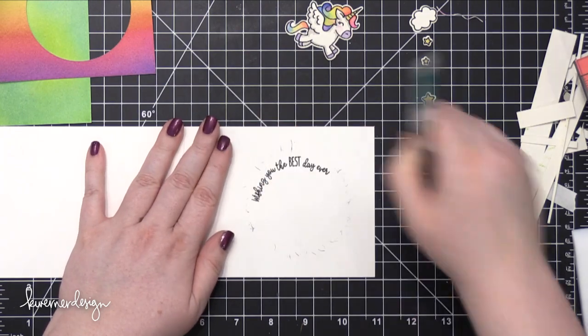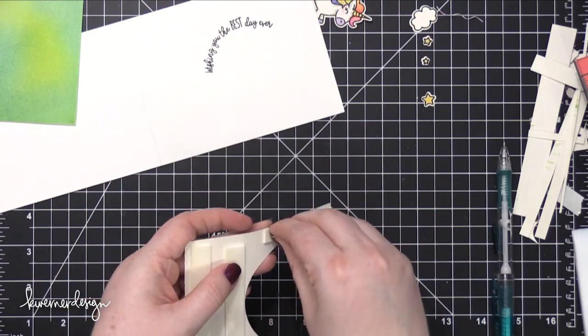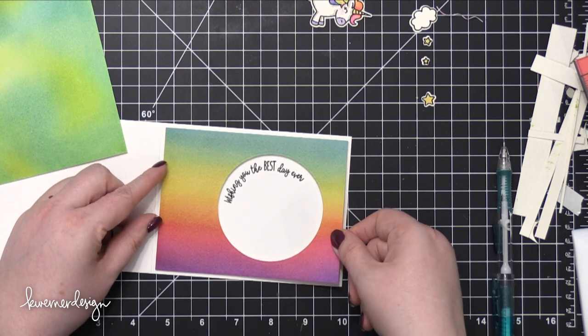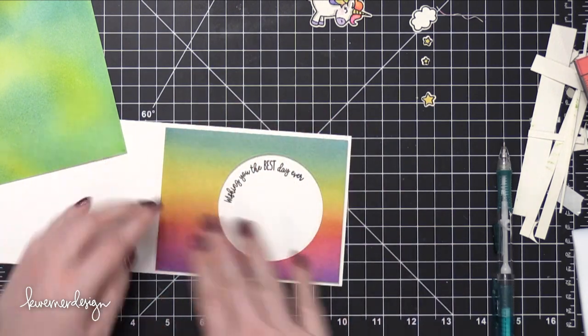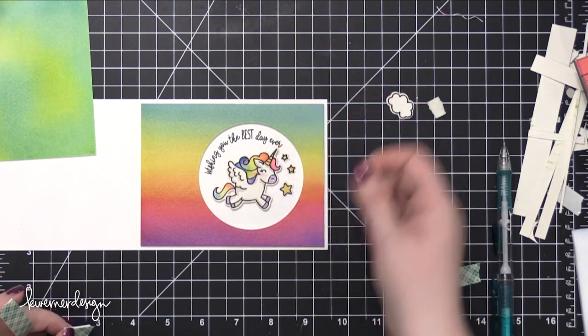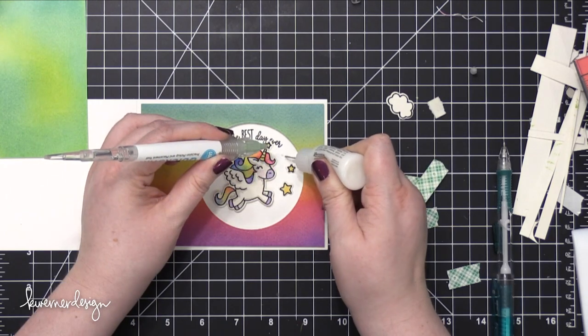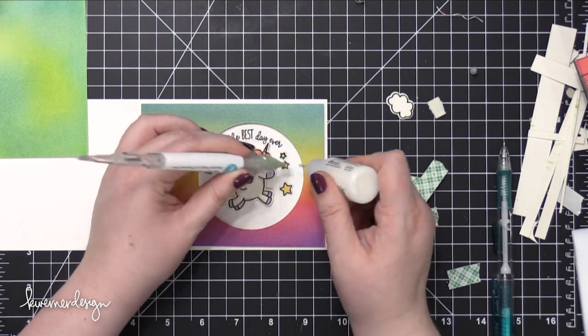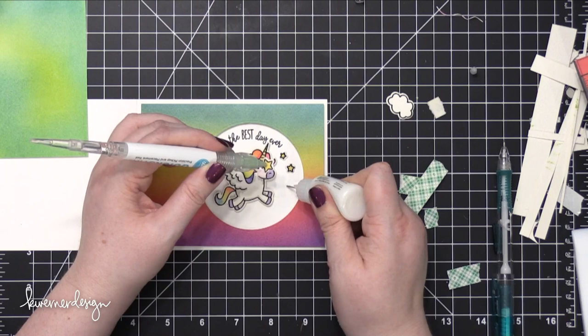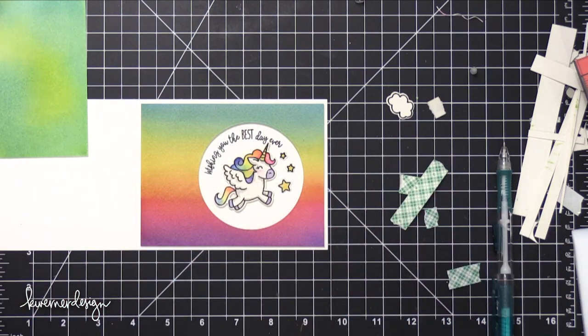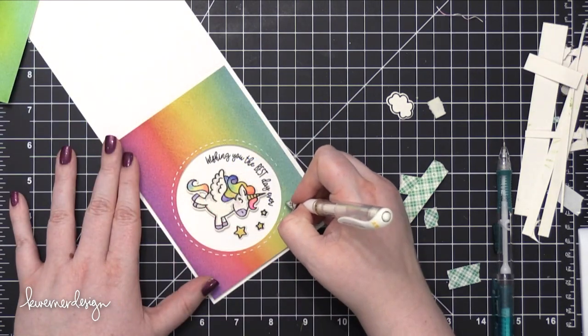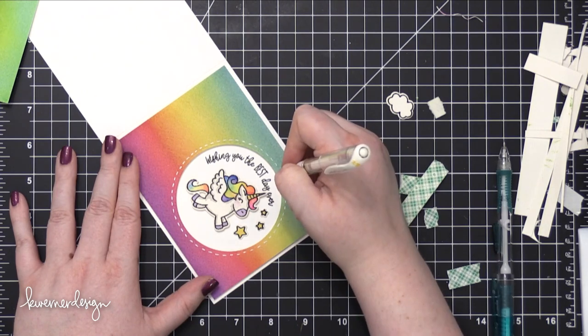I'm going to add some foam adhesive on the back of that watercolor piece and then I'm going to press that down onto the card front. I'm going to arrange my cute little rainbow Pegasus and the stars on the inside of that circle area. And then I'll use some foam adhesive to adhere the Pegasus and I'll use some Ranger Multimedia Matte, which is a really strong liquid glue, to adhere the stars. I'm just picking those stars up with a quick sticks tool. And then I'll add some white dashed lines around the outer edge with the Uni-Ball Signo Broadway pen.